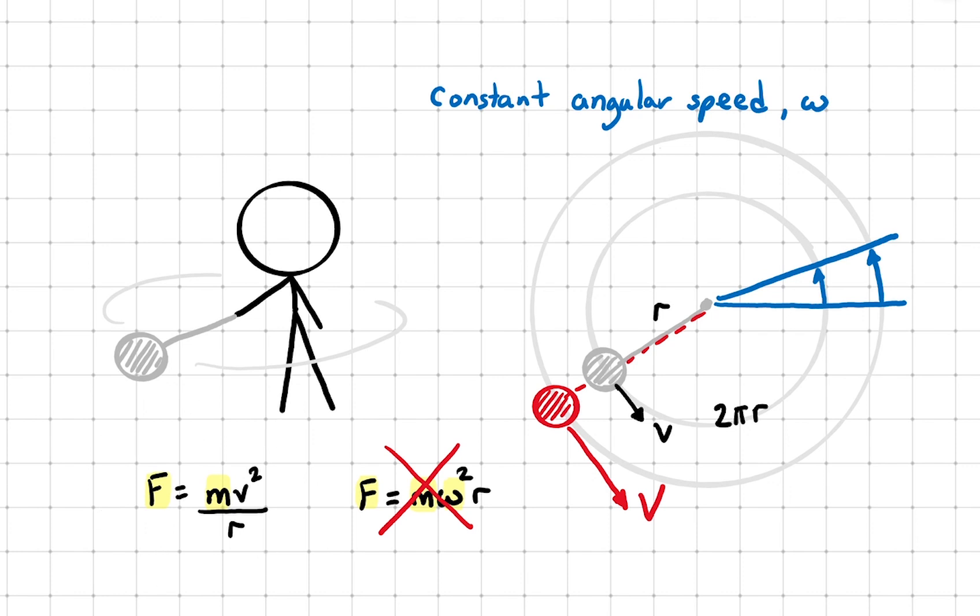But mv squared over r allows us to compare linear speed and the radius. It tells us that if we increase the radius of the circular motion, applying the same force will allow a larger linear speed.